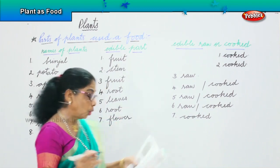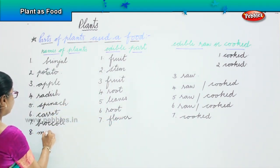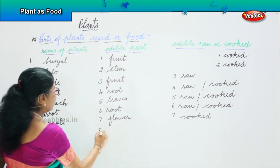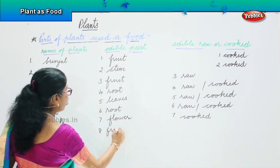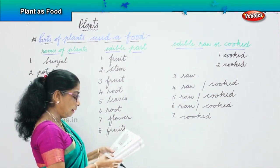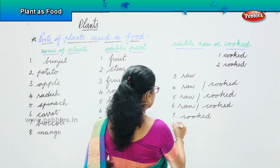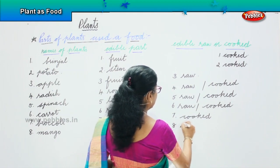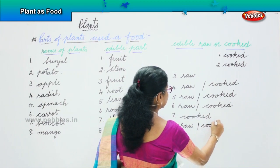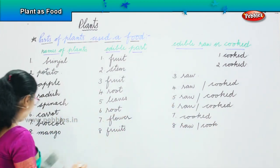Next, let's look at mango. What is mango? Mango is a fruit. It can be eaten raw. You can also cook it. You can cook it, you can eat it raw.